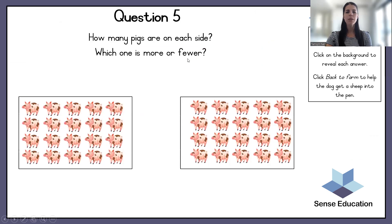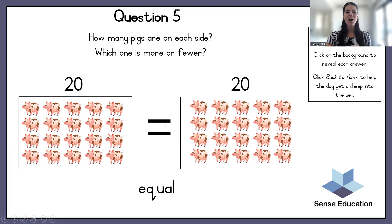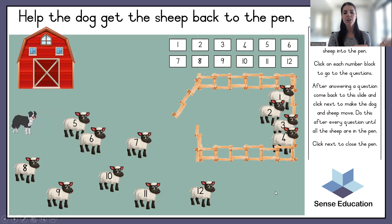Let's go to number 5. How many pigs are on each side? Which one is more or fewer? It looks like there are five at the top and they are nicely lined up, so we can count in fives. One, two, three, four, five — let's count in fives. Five, ten, fifteen, twenty. There are 20 pigs on this side. There are also five at the top on this side, so five, ten, fifteen, twenty. There are twenty on this side and twenty on that side — they are equal. They are exactly the same.